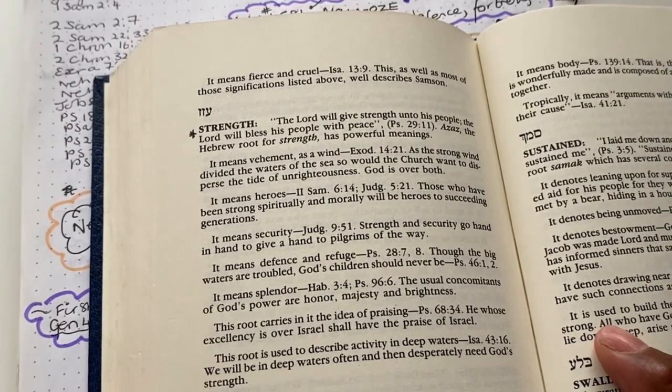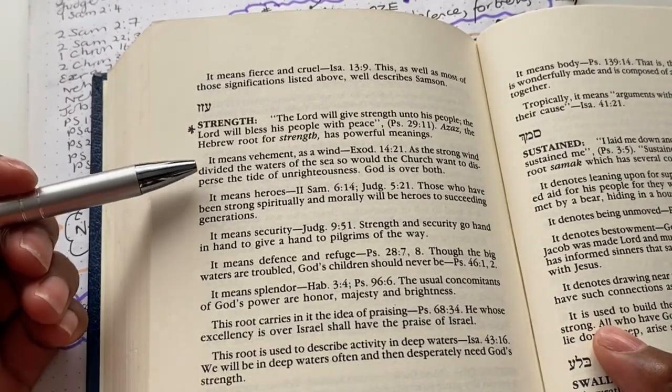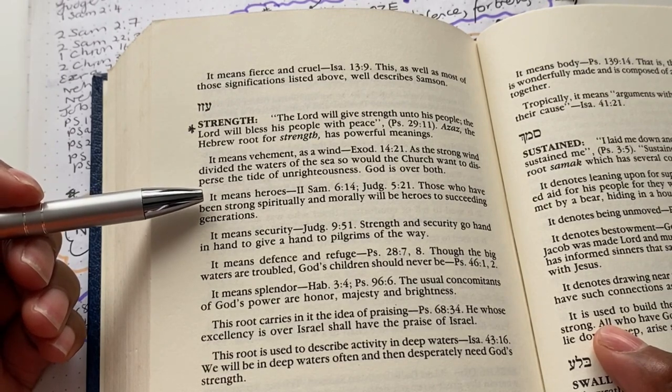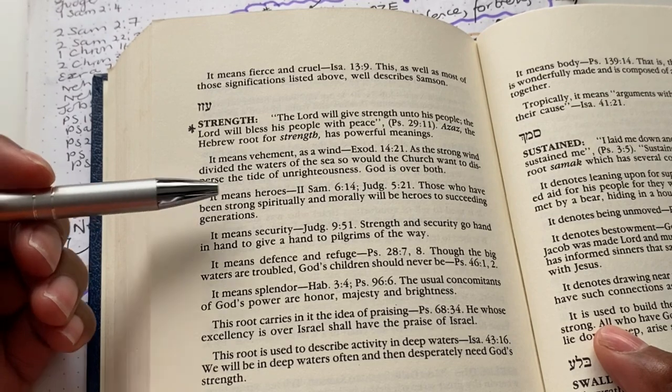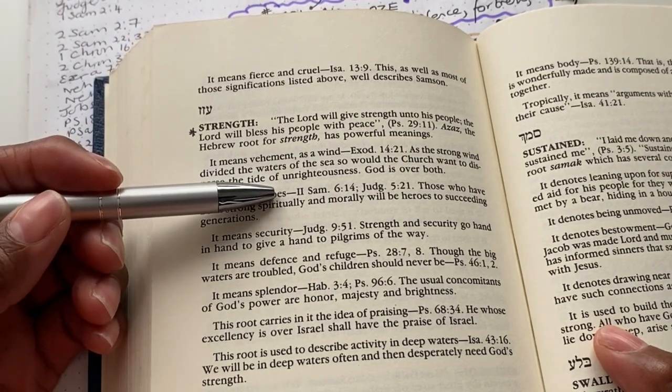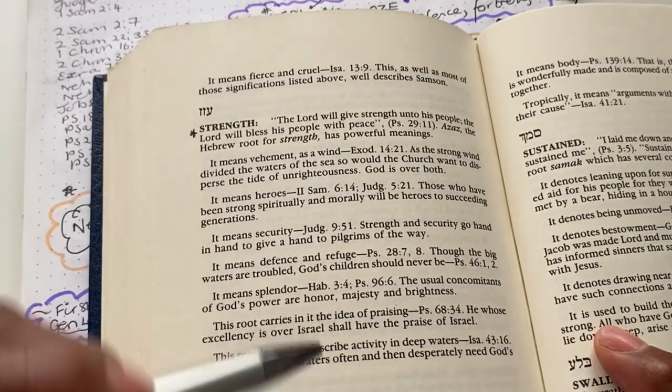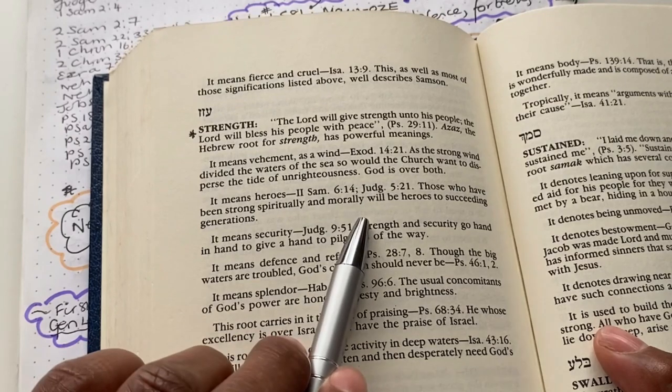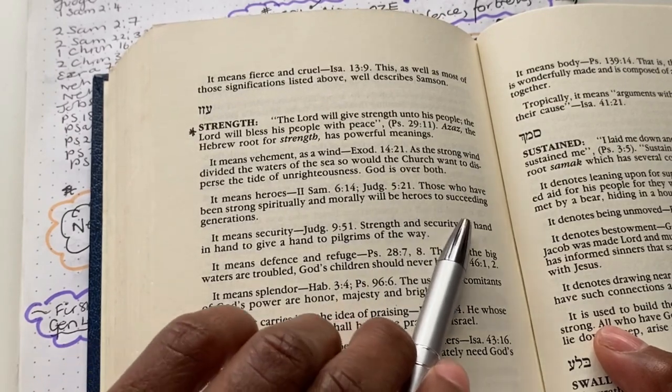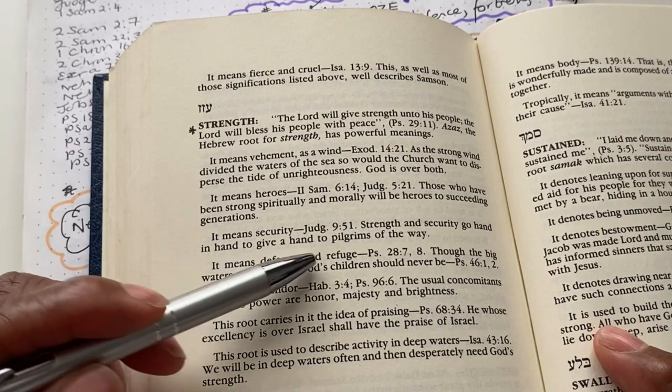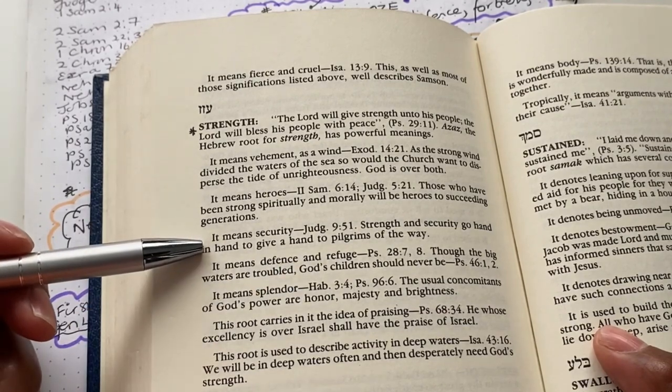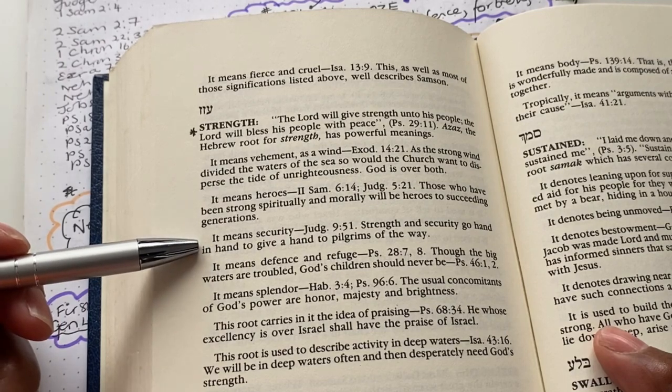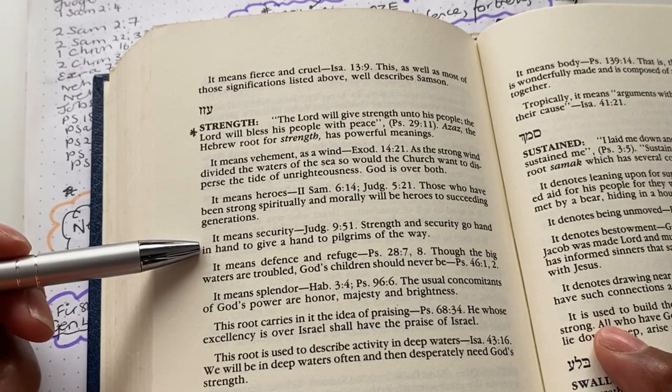So for example, let's have a look. It means heroes. So if you look at second Samuel 6:14 and judges 5:21, it means heroes. So those who have been strong spiritually and morally will be heroes to succeeding generations. In judges 9:51, it means security,